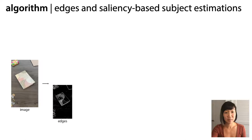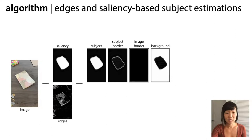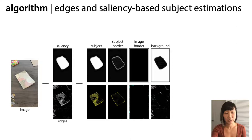Given an image, our tool detects edges throughout the image. However, we want to focus on edges related to subject-background separation and image-border flicker. In particular, we need to identify a border around the subject. We realized we could estimate the image subjects using object-based saliency maps. So given this saliency map, we segment the image into regions describing the subject, subject border, image border, and remaining background. These segmentations are used to classify and color-code the edges.